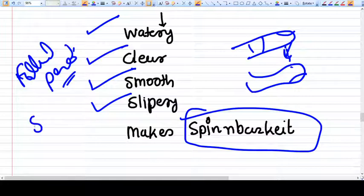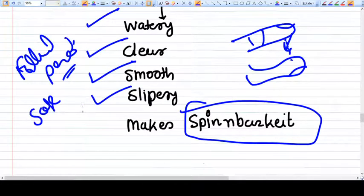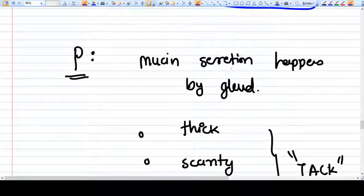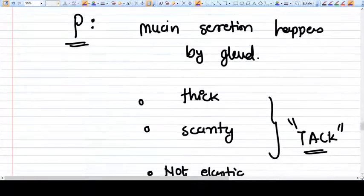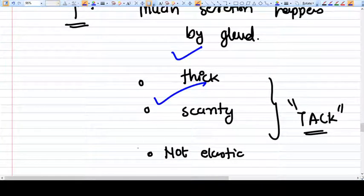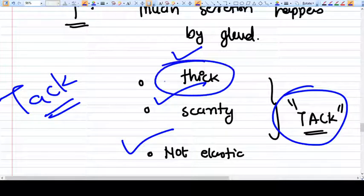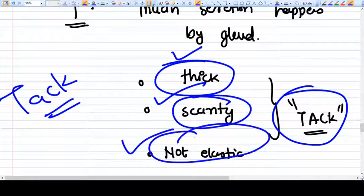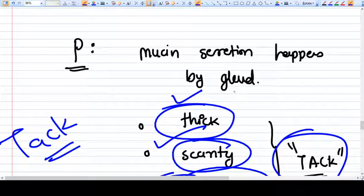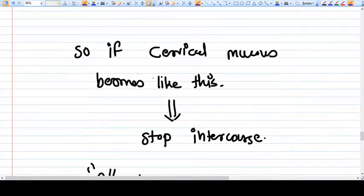Once the cervical mucus changes and becomes thick, scanty, not elastic, which is called thick cervical take. The mucus becomes thick, scanty, not elastic. This happens when the progesterone now dominates, and the presence of progesterone says that yes, there is ovulation, there is a corpus luteum.